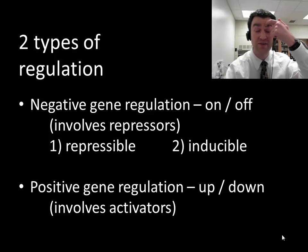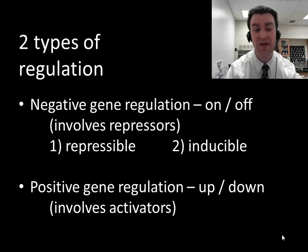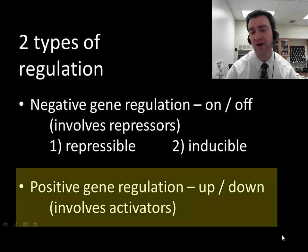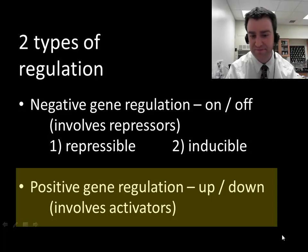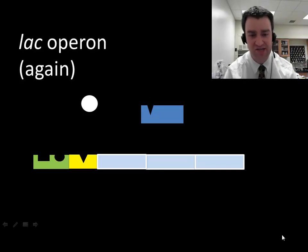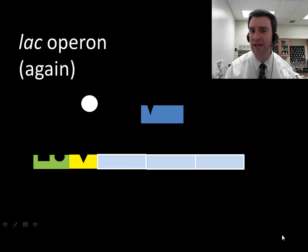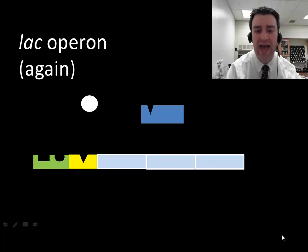We just talked about two styles of what I call negative gene regulation — controlling when expression is on or off, involving repressors. Now let's talk about the idea that not only can E. coli just have expression on, but they can also turn it up to prioritize expression. That's what we call positive gene regulation, and that's going to involve activators. I'm going to take the repressor out of the picture so we can just focus on activators. We're going to assume we're talking about the lac operon here, and maybe the repressor has already been inactivated — lactose is around, we need to cut up lactose sugar.